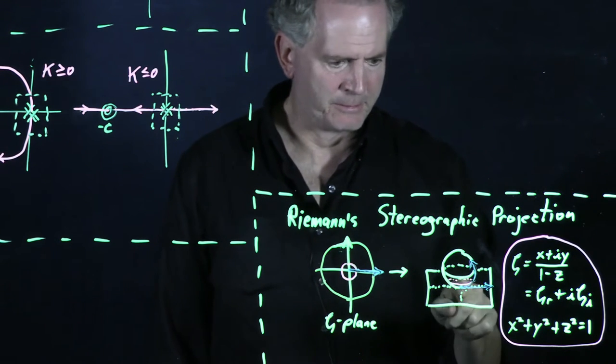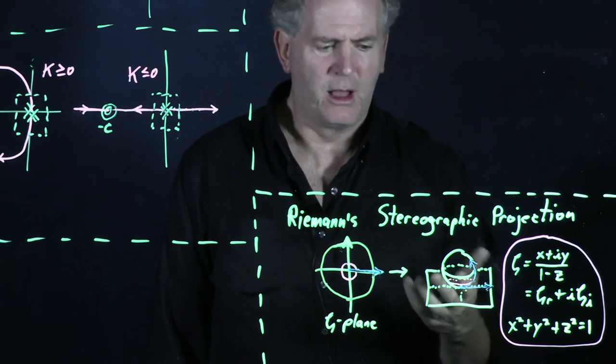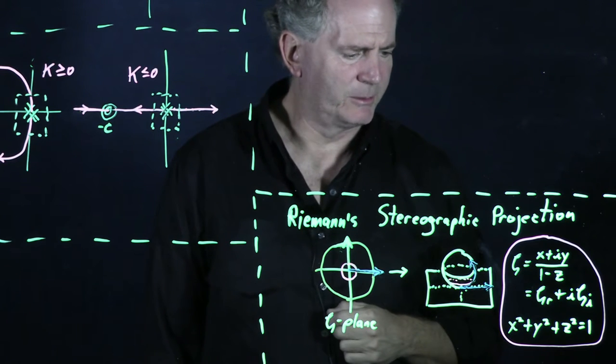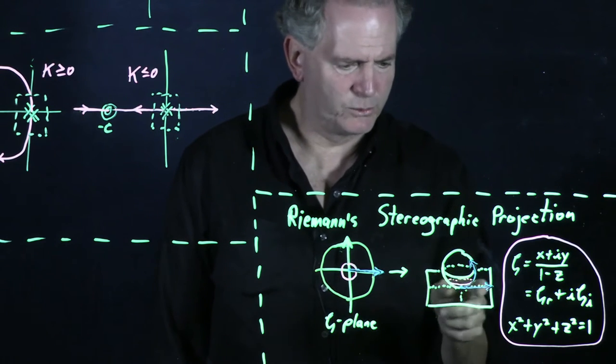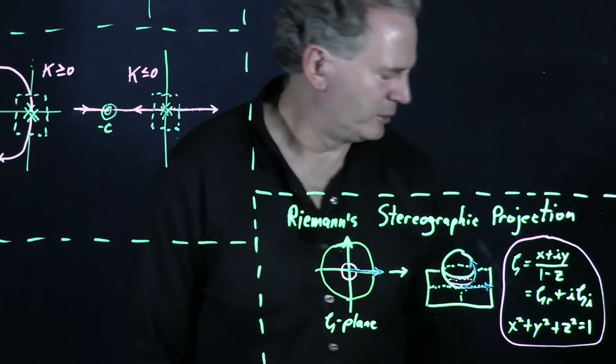Well, clearly it approaches the north pole. And so the mapping of this ray, as we map it onto the sphere using this stereographic projection, maps this ray onto this longitude line that goes from the south pole to the north pole.